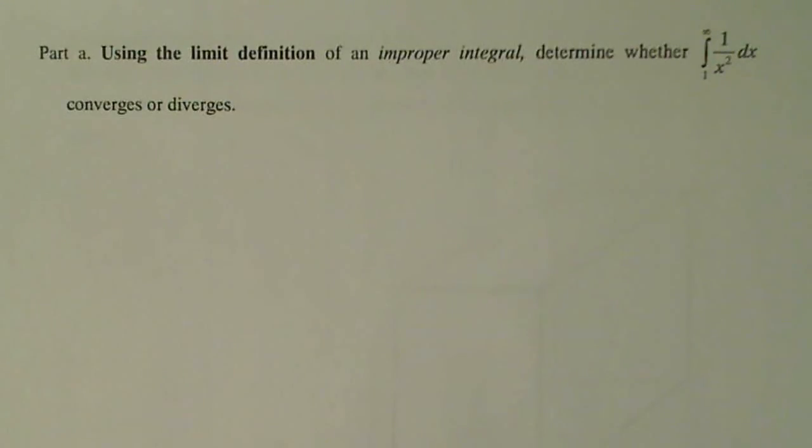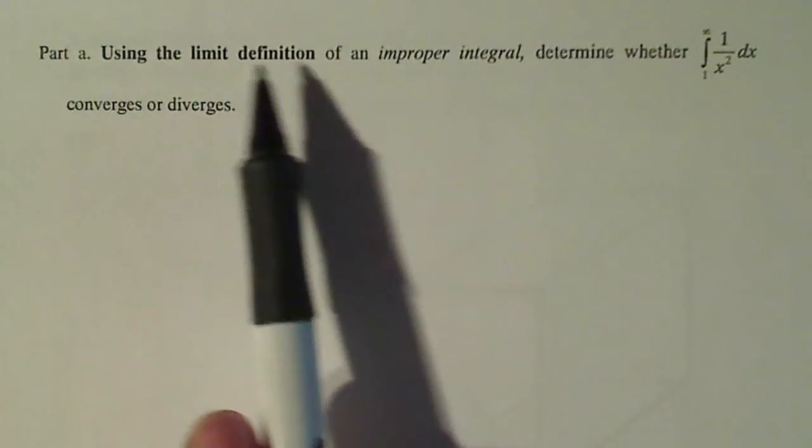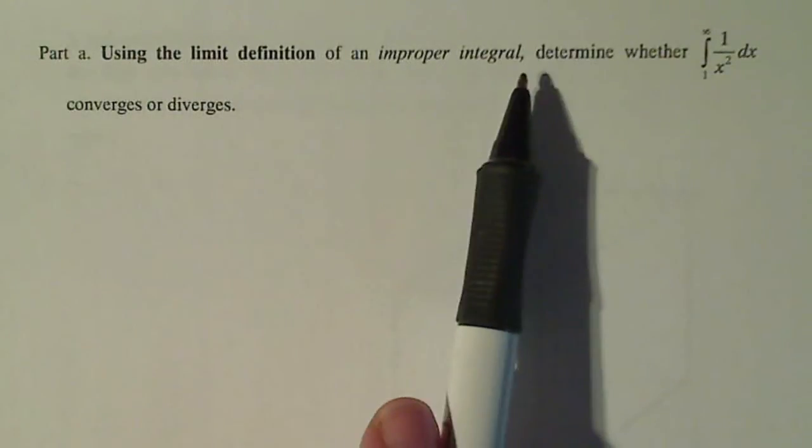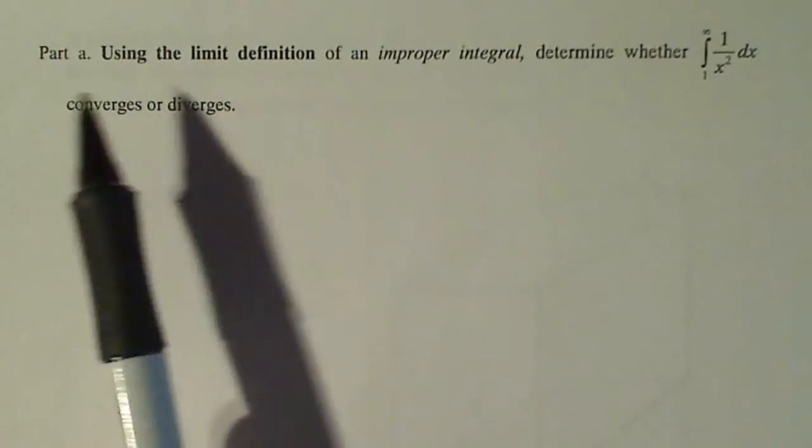This is a two-part problem here. The first part, part a, we're going to use a limit definition of an improper integral to determine whether this integral that goes from one to infinity converges or diverges.